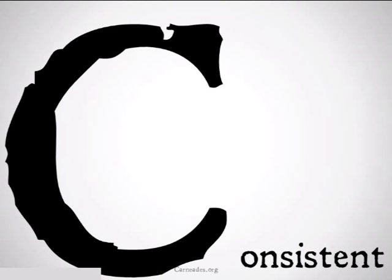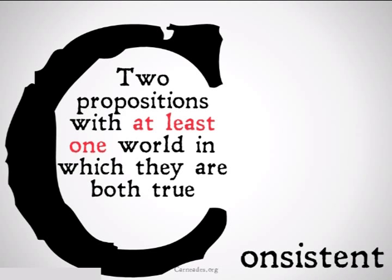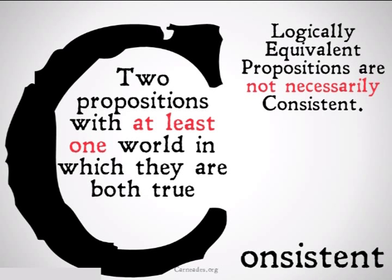Consistent propositions are defined as two propositions with at least one world in which they are both true. It's important to note that logically equivalent propositions are not necessarily consistent, because it is possible for two logically equivalent propositions to just always be false, in which case they would not be consistent.